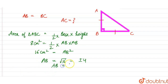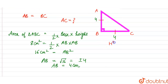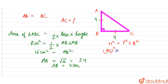So AB equals 4 centimeter and BC equals 4 centimeter. To find AC, we use the Pythagorean theorem: hypotenuse squared equals perpendicular squared plus base squared. So AC squared equals 4 squared plus 4 squared.